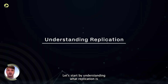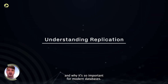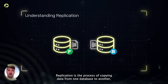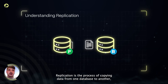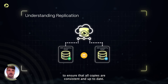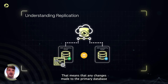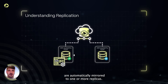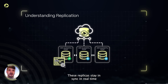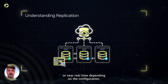Let's start by understanding what replication is and why it's so important for modern databases. Replication is the process of copying data from one database to another to ensure that all copies are consistent and up-to-date. That means that any changes made to the primary database are automatically mirrored to one or more replicas. These replicas stay in sync in real-time or near real-time, depending on the configuration.